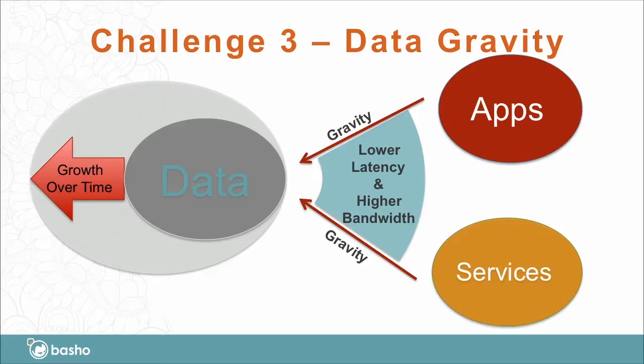Finally, that brings us to a third challenge, which is data gravity. As you end up storing all this data in one or more locations, you end up having applications and services that want to leverage it, and they're more advantaged the closer they are to the data. It's the idea of what data locality drives us to: lower latency and higher bandwidth. The closer you are, the lower your latency and likely the higher the bandwidth. That makes the data attractive, and as you interact with that data, you create more data — every interaction creates additional data, whether in the data source itself or in log files and other things. So this has a growth effect, and all of these things compound upon each other.